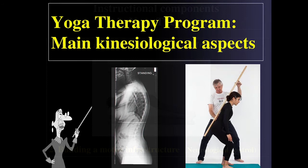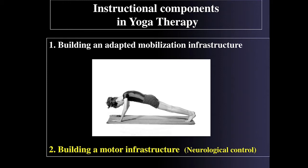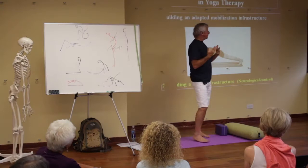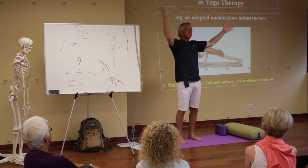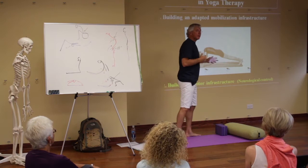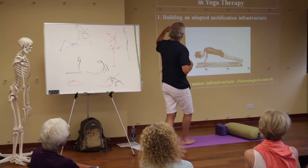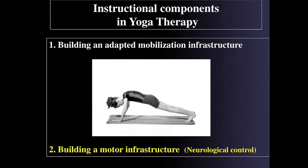I am talking about some kinesiological aspects. If I have to deal with something that goes wrong — this movement, that movement, something goes wrong — in order to improve it, in any kind of problem or limitation, I divide it into two components which are very important. The first one is building adapted mobilization infrastructure.